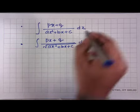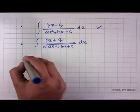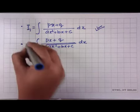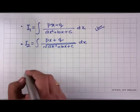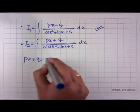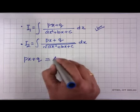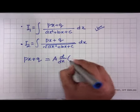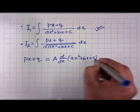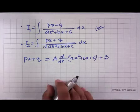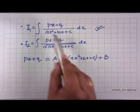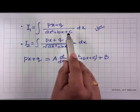Let us choose the first example I₁ = ∫(px+q)/(ax²+bx+c)dx. To solve I₁, we write the numerator px+q as a constant A times the derivative of the denominator (ax²+bx+c), plus another constant B — where A and B are unknowns to be determined. The numerator is linear and the derivative of the quadratic denominator is also linear, so the expressions are comparable.